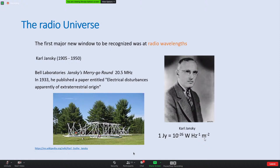In honor of the man who serendipitously discovered radio emission from outside our terrestrial environment, the unit of flux density is named after Jansky. One Jansky is 10 to the power of minus 26 watts per hertz per meter squared. By today's standards a one Jansky source would be considered very strong - the Giant Metrewave Radio Telescope near Pune, built by the National Centre for Radio Astrophysics of TIFR, goes down to microjansky levels, showing how far we have progressed.